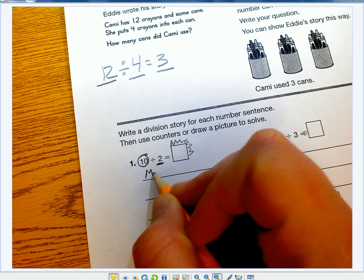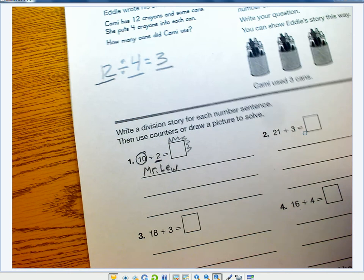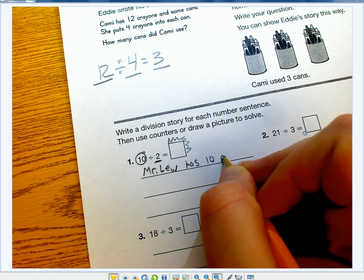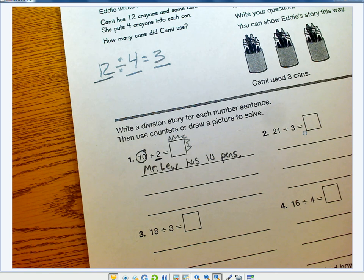Pick a person to start with. Let's say Mr. Liu, everybody's favorite principal in the world. Mr. Liu has 10 pens. And then you have to think of a realistic thing that Mr. Liu could put pens into. Let's say a cup.